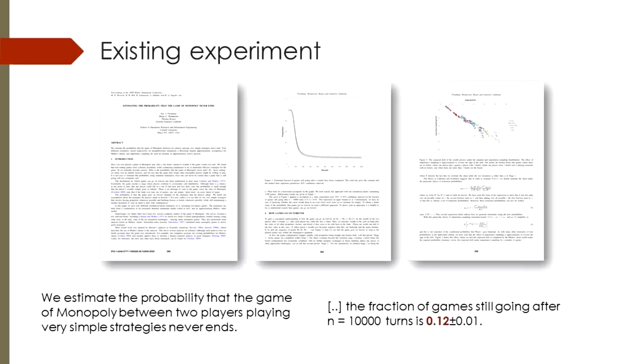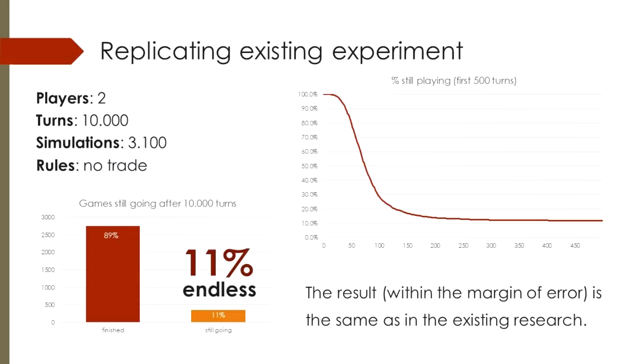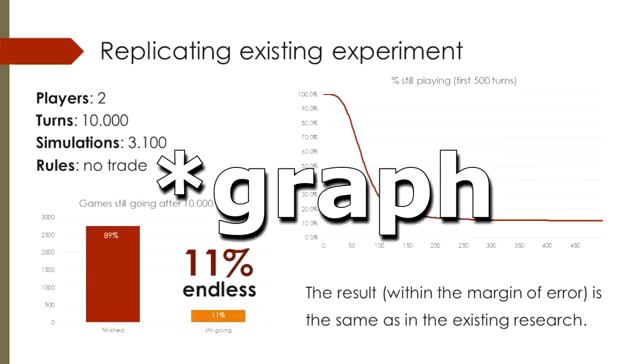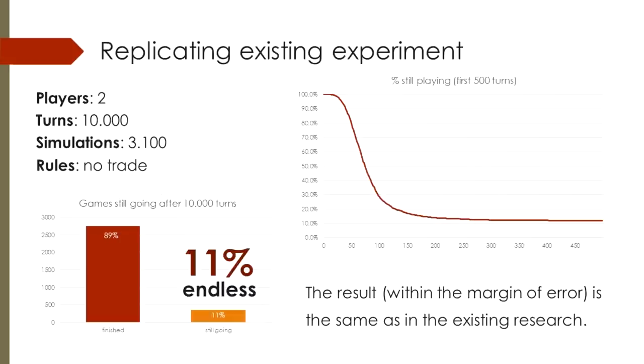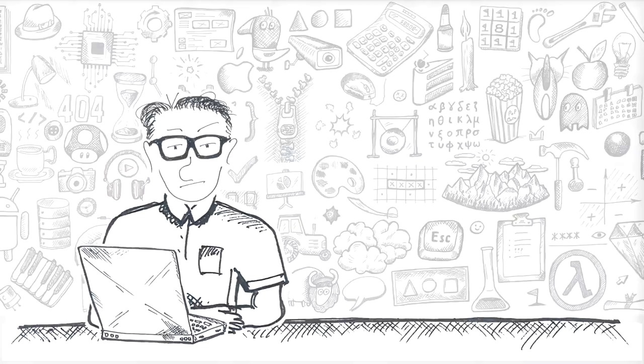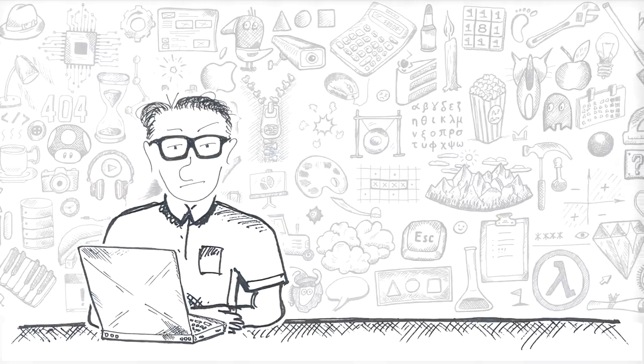Let's start with replicating the research I mentioned earlier. Two players, no trade, and I will also set other parameters to match the simulation. Here are the results. Around 11% of games would have no winner after 10,000 turns. This is not exactly the same as the paper, but this is close enough. I also drew a similar diagram of the number of games still going on versus number of turns. Again, pretty much the same picture. This is a good start. It means we're doing something right.